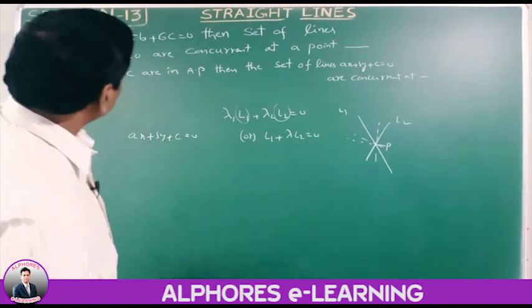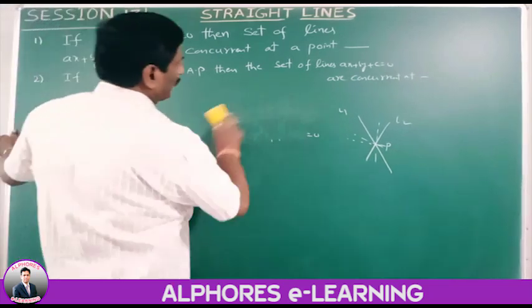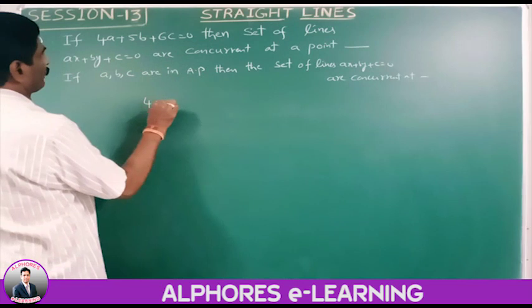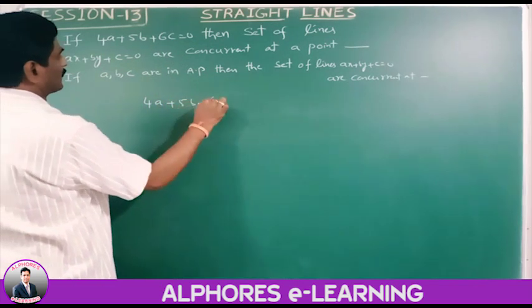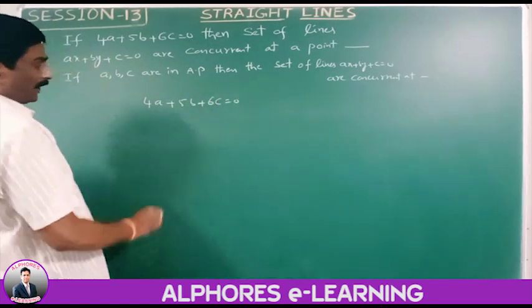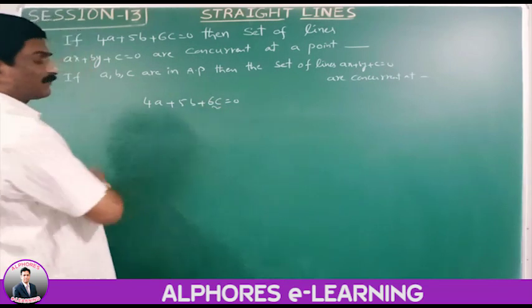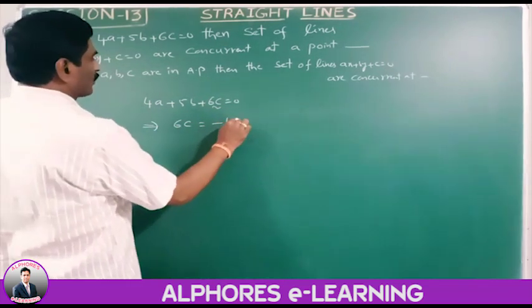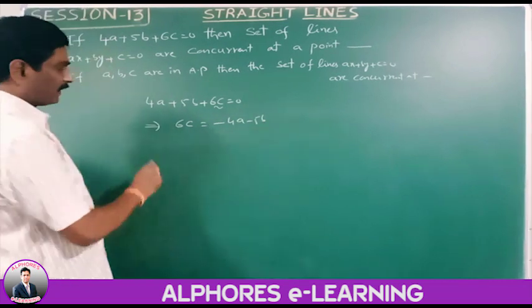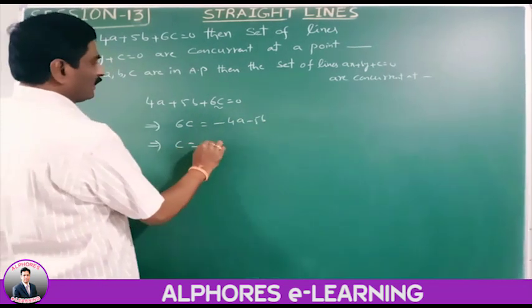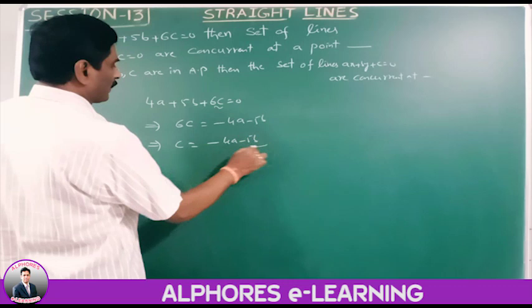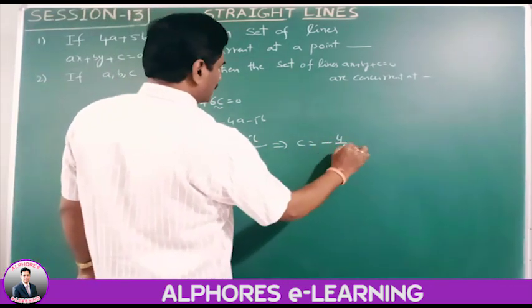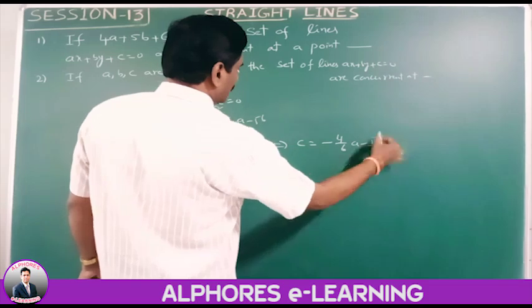Please note: from the given condition 4a plus 5b plus 6c equals 0, we reduce the value of c in terms of a and b. 6c equals minus 4a minus 5b, so c equals (minus 4a minus 5b) divided by 6.